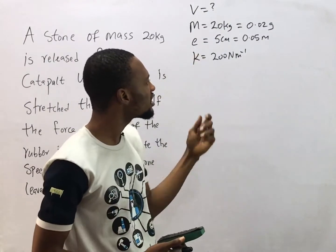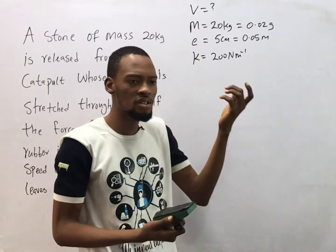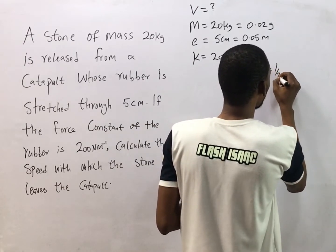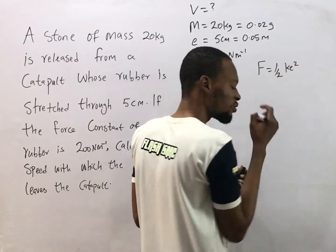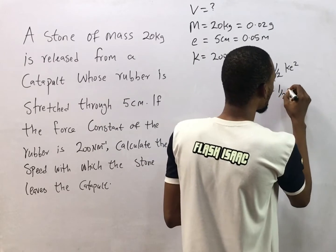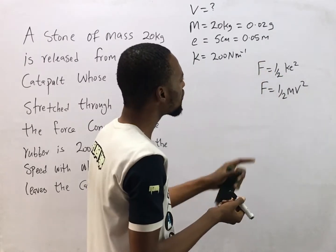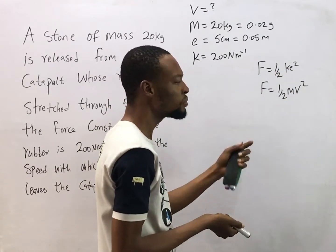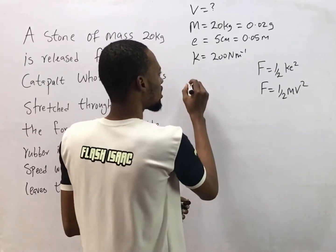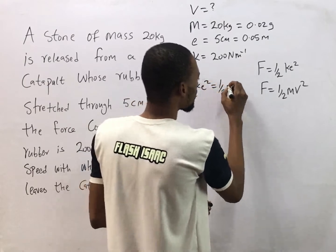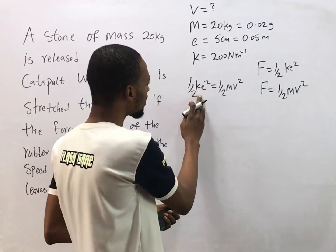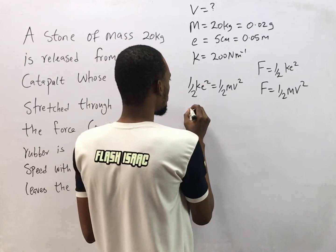We need a formula relating velocity, mass, extension, and force constant. We know that elastic potential energy = ½ke² and kinetic energy = ½mv². Setting them equal: ½ke² = ½mv². This means ke² = mv². Now we have the force constant, extension, and mass, so let's substitute.